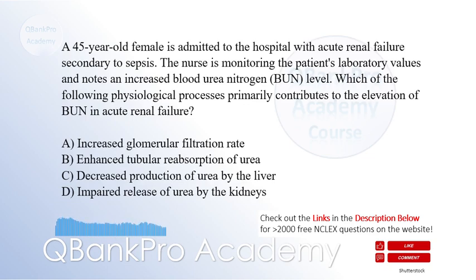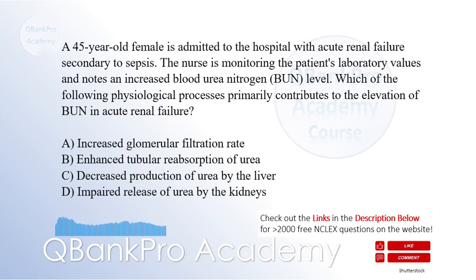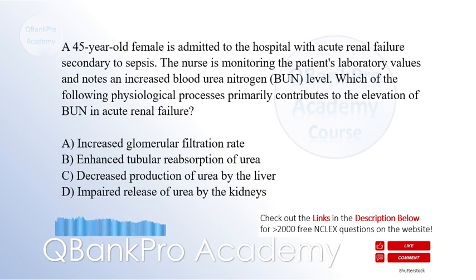A 45-year-old female is admitted to the hospital with acute renal failure secondary to sepsis. The nurse is monitoring the patient's laboratory values and notes an increased blood urea nitrogen, BUN, level. Which of the following physiological processes primarily contributes to the elevation of BUN in acute renal failure? A. Increased glomerular filtration rate. B. Enhanced tubular reabsorption of urea. C. Decreased production of urea by the liver. D. Impaired release of urea by the kidneys. The correct answer is B, enhanced tubular reabsorption of urea.